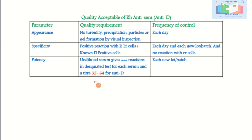The QC of reagents in blood bank differs from other sections like chemistry and hematology, where QC is required each shift of eight hours. In blood bank, QC is required once every 24 hours.